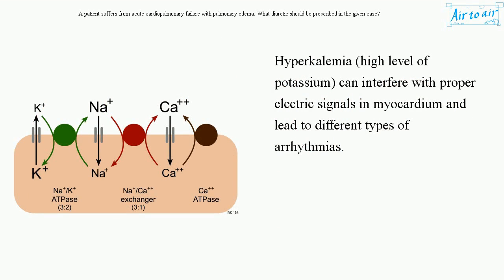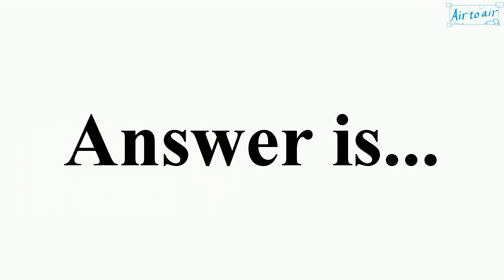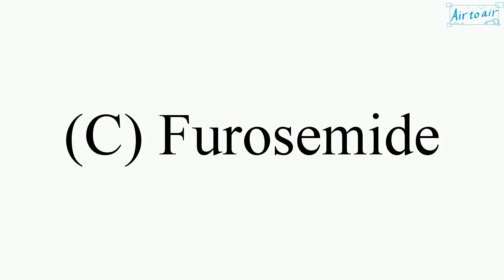Hypokalemia — a low level of potassium — can interfere with proper electrical signals in the myocardium and lead to different types of arrhythmias. The answer is C. Furosemide.